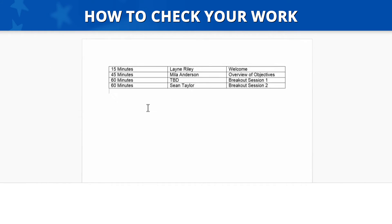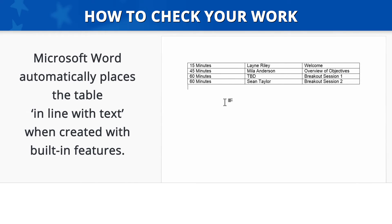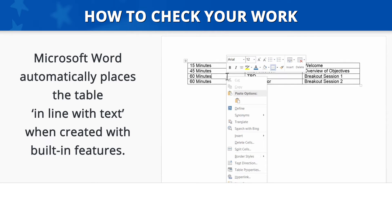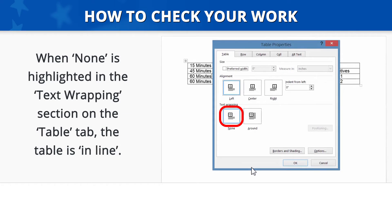Now let's ensure the table is in line. When you create a table using built-in features, Microsoft Word automatically places the table in line with text. We can verify this by right-clicking on the table and selecting Table Properties. When None is highlighted in the Text Wrapping section on the Table tab, the table is in line.